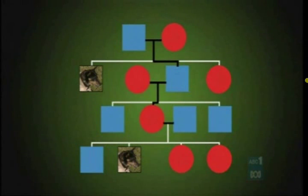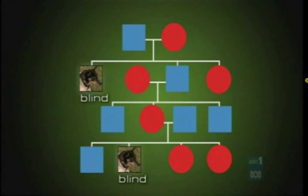Thus, every cell in Oscar's body has the defective gene, not just one or two. But of course, not every terrier in Oscar's line goes blind.